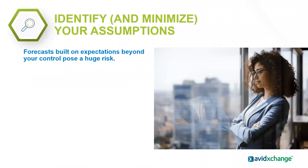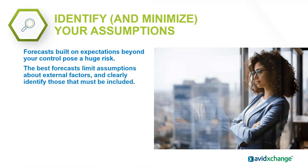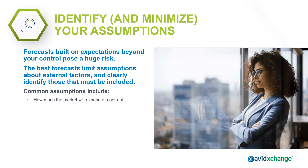Number two: identify and minimize your assumptions. Any forecast requires that you make assumptions about things that are outside of your control. The best forecast limits assumptions about external factors, but clearly identifies those that must be included. Some common assumptions are market viability, your competitors and their offerings, technological changes that might impact your business, and the overall health of your partners throughout your supply chain.